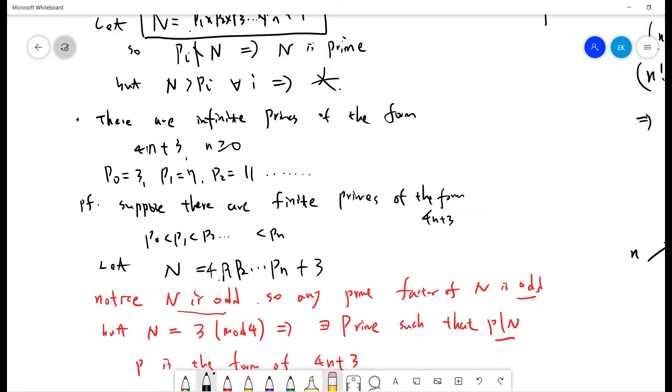So the idea is that we do the same thing. Suppose there are finite primes of the form 4n plus 3. So we get p0, p1, p2, up to pn. And then we let capital N equal 4 times p1 p2 up to pn plus 3.